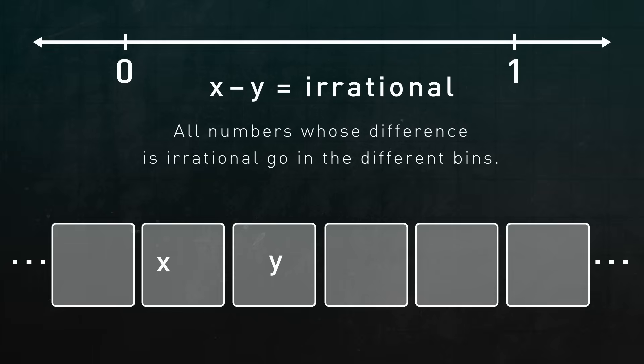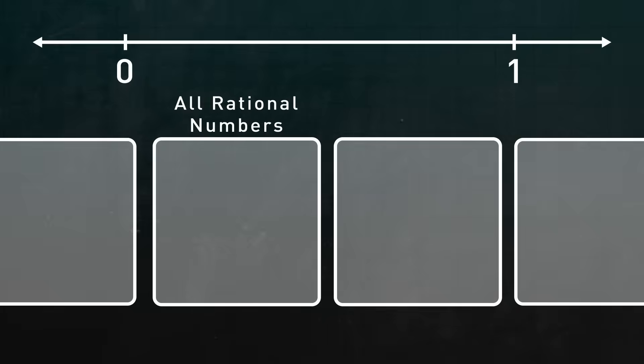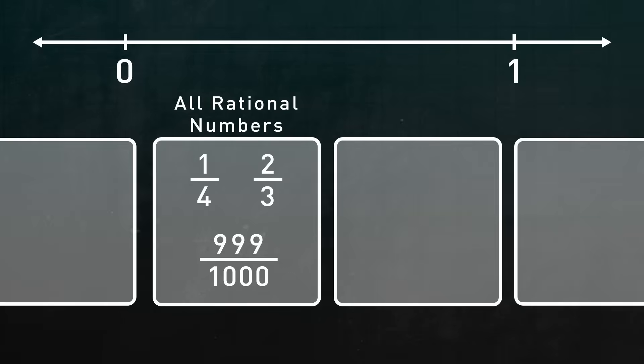This is an example of separating things into equivalence classes. Let's look at these bins in a little more detail. If you take any two rationals and subtract one from another, you get a rational. So one bin will contain all the rational numbers, like one-quarter and two-thirds and 999 thousandths. But if you take any two irrationals and subtract one from another, the result might not be a rational number. So they can't all go in the same bin.